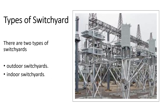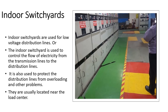There are two types of switchyards: outdoor switchyards and indoor switchyards. Indoor switchyards are used for low-voltage distribution lines. The indoor switchyard is used to control the flow of electricity from the transmission lines to the distribution lines. It is also used to protect the distribution lines from overloading and other problems. They are usually located near the load center.